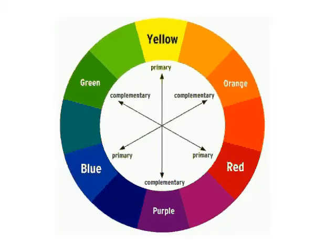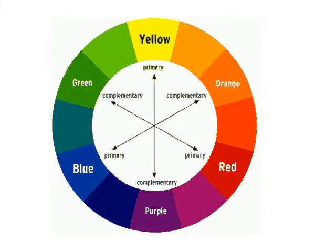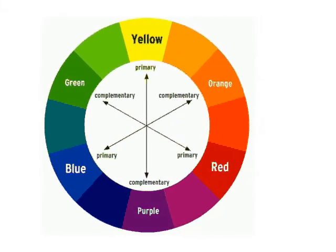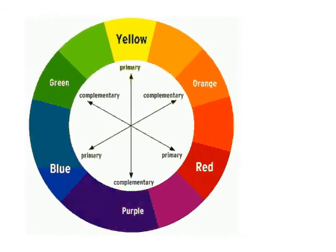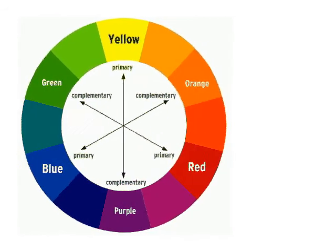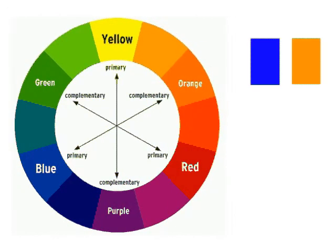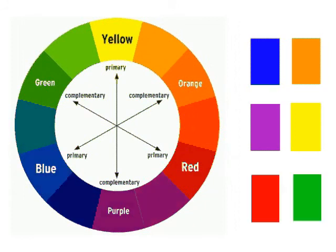On the colour wheel, the colours that are placed opposite each other are complementary colours. They are blue and orange, purple and yellow, and red and green.